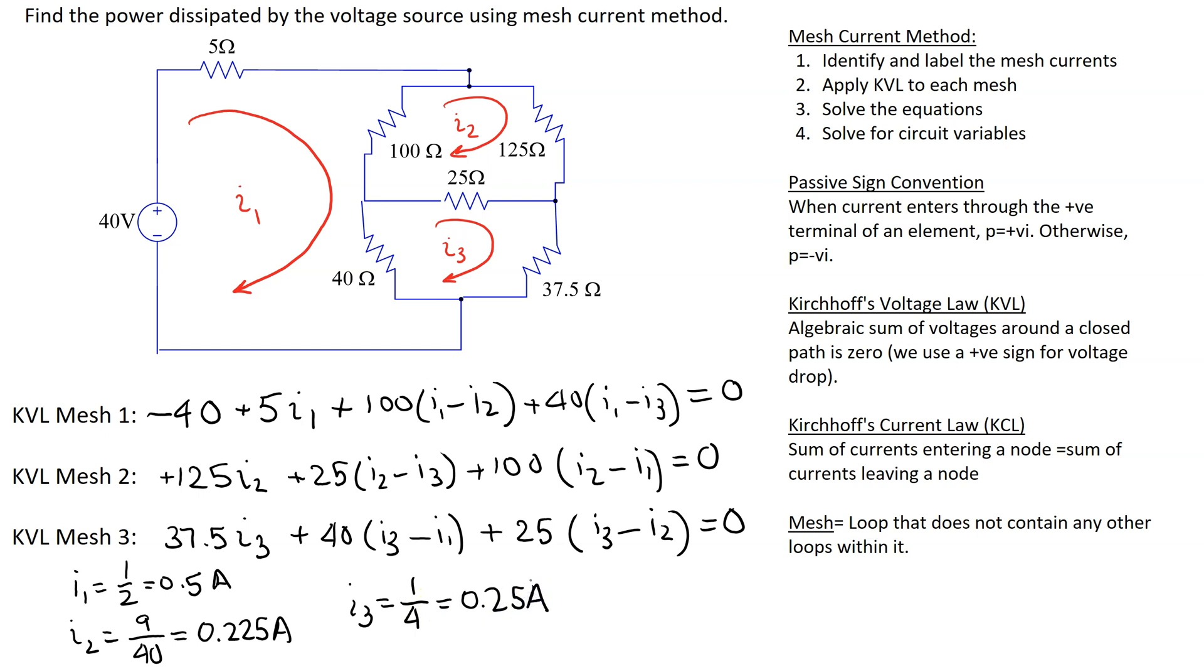Once the mesh currents are found we can solve for the desired circuit variables. In this case we have to find the power dissipated by the voltage source. We can see that mesh current I1 is the only current flowing through the voltage source. So the power associated with the voltage source is the voltage, which is 40 volt, times the current, which is I1.